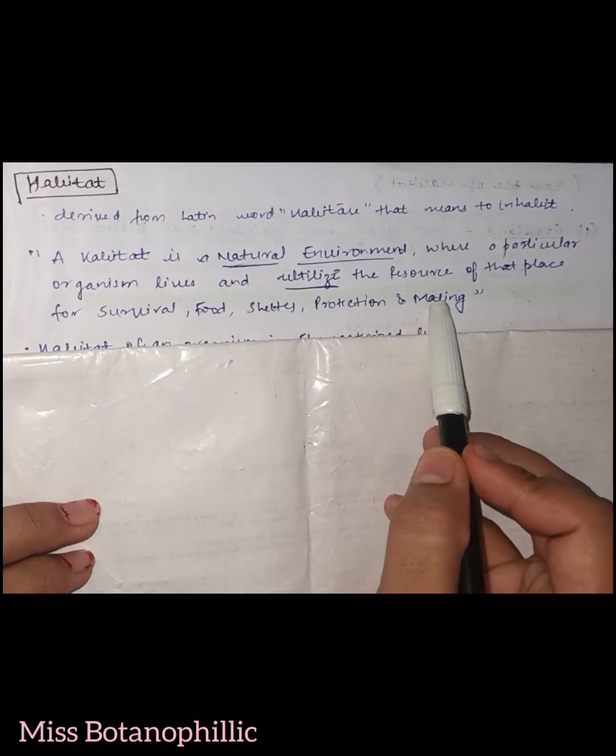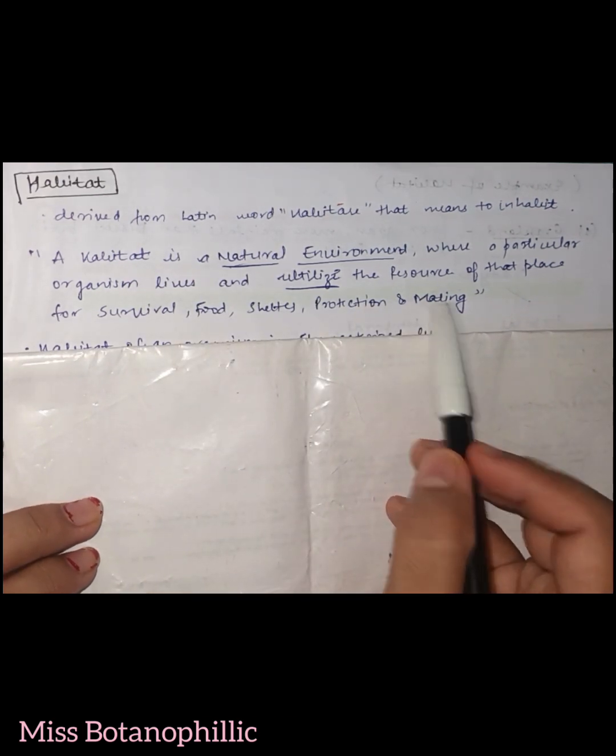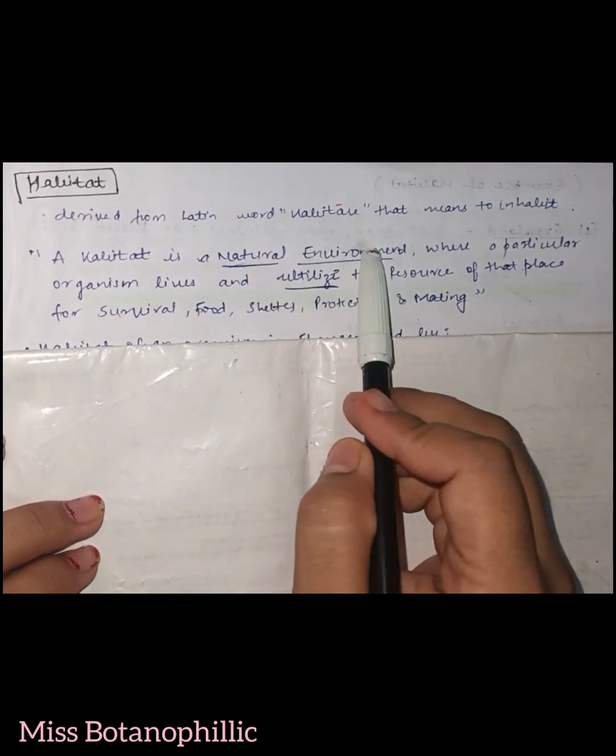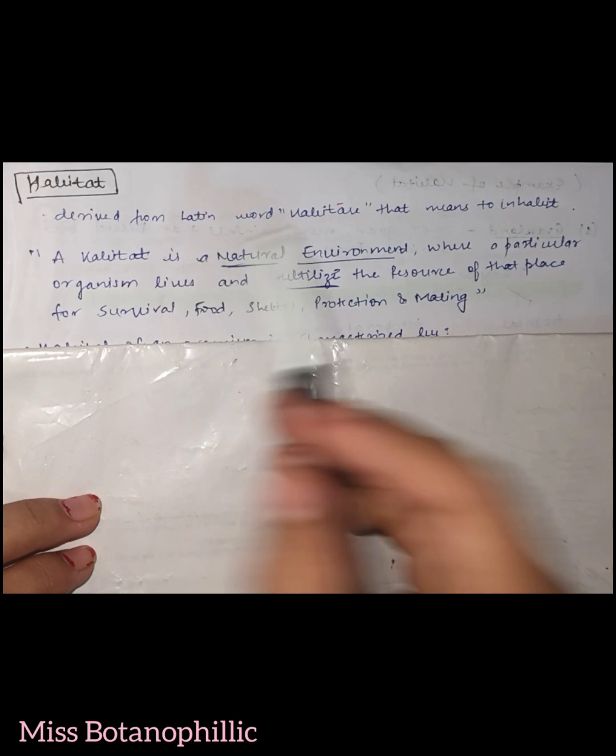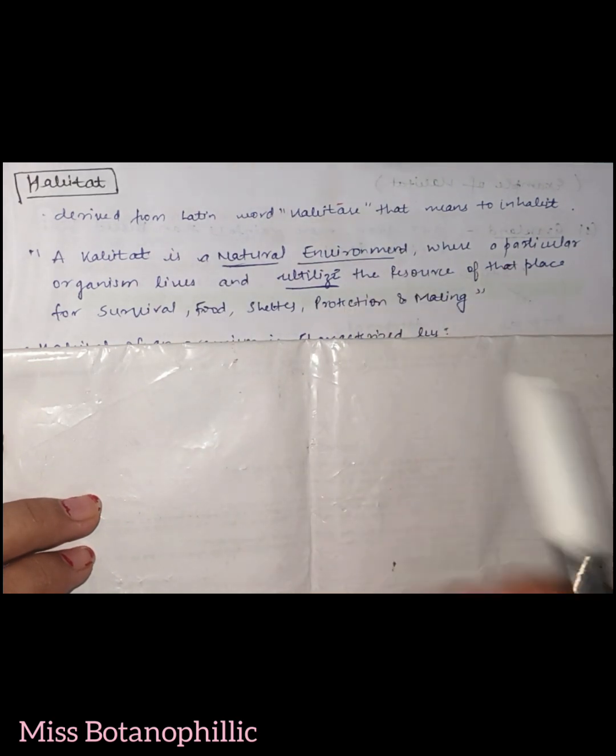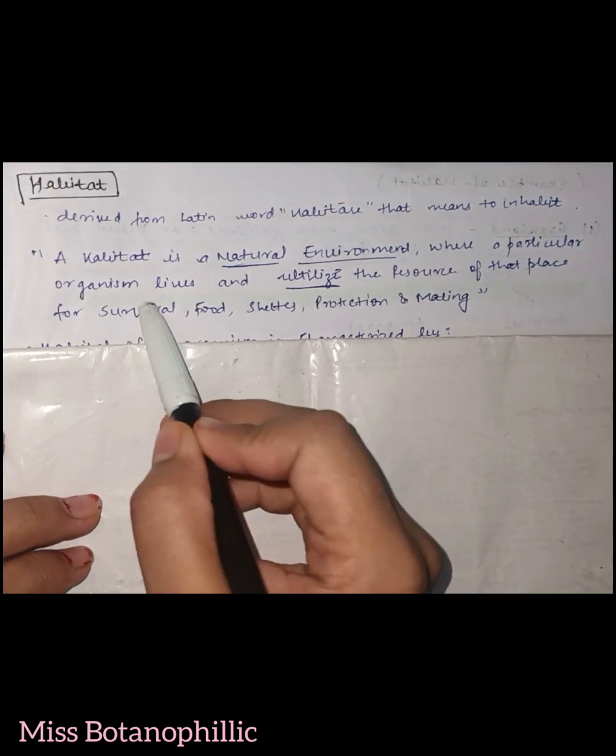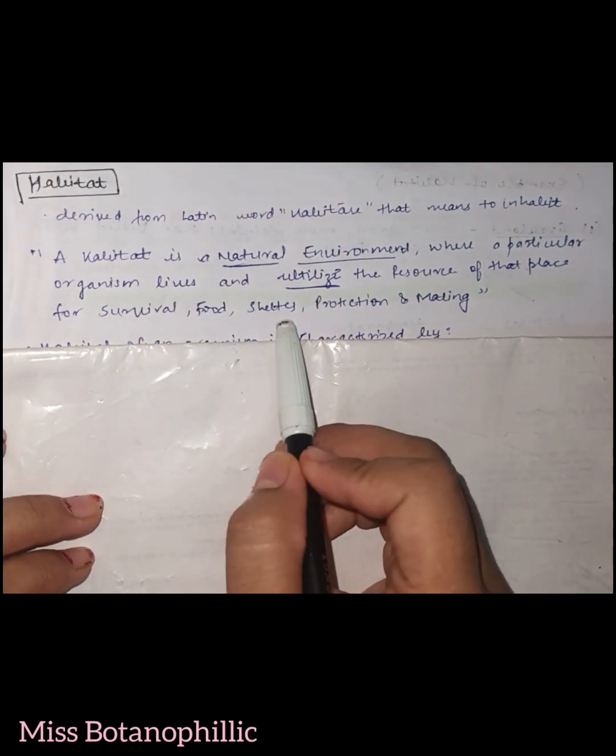protection and mating. So basically, habitat is a natural environment where a particular organism is living, and that organism utilizes the resources of that place for survival, for food, for shelter,